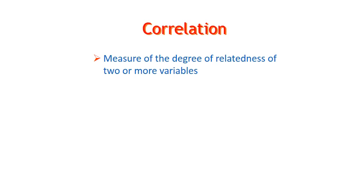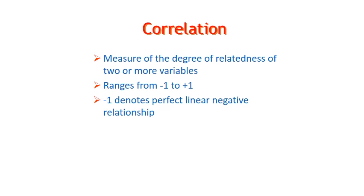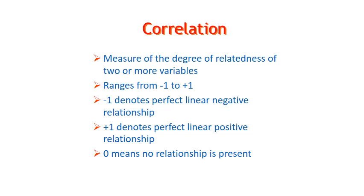Correlation measures the degree of relatedness of two or more variables. It ranges from negative one to positive one. Negative one denotes perfect linear negative relationship, positive one denotes perfect linear positive relationship, and zero means there's no relationship.